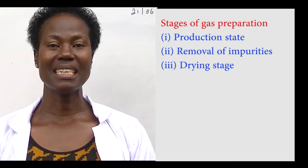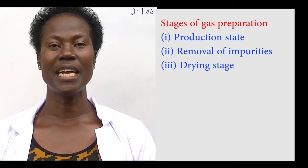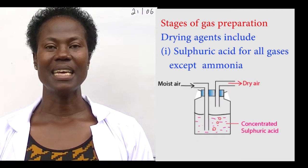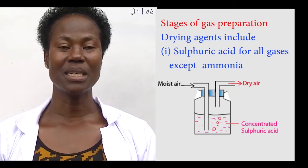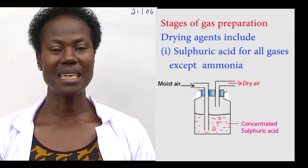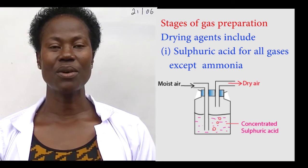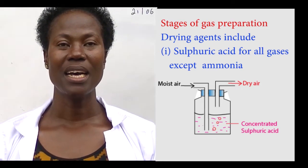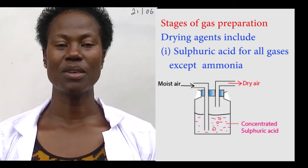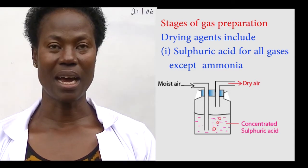Then the third stage is the drying stage. This involves removal of any moisture that has come along with the gas. There are many drying agents which can be used in this stage. We can use concentrated sulfuric acid. This concentrated sulfuric acid has got a high affinity for water so the moist gas can be passed through concentrated sulfuric acid and then you collect it at the other end when it is dry.